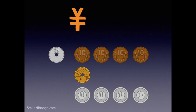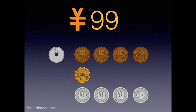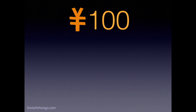How much do we have in total here? We have 99 yen here, right? How do you say 99 yen in Japanese? You must know it since we've just learned how to say Japanese numbers up to 99. 99 yen is kyuu-juu-kyuu en.